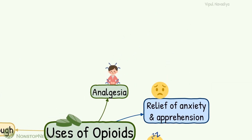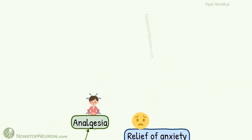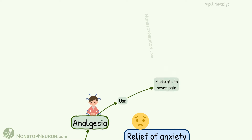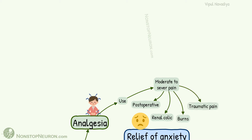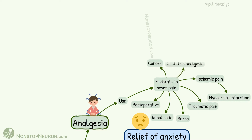Let's dig deep into analgesia first. Opioid group of drugs are used for moderate to severe pain, for example postoperatively, for renal colic, burns, traumatic pain, systemic pain like myocardial infarction, cancer pain, and in obstetric analgesia.